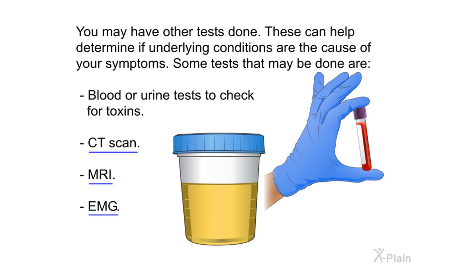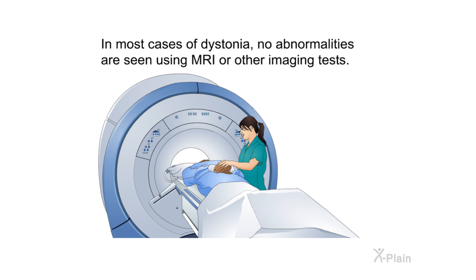Tests that may be done include blood or urine tests to check for toxins, a CT scan, an MRI, and an EMG. In most cases of dystonia, however, no abnormalities are seen using MRI or other imaging tests.